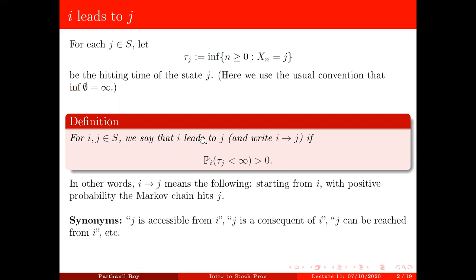Now the notation will be this. And as we talked about last time, there are lots of synonyms that can be used. j is accessible from i, j is a consequent of i, j can be reached from i, etc. Various textbooks use various names. And if you look at Sid Resnick's book, Adventures in Stochastic Processes, he uses this one, j is accessible from i, but we will stick to this i leads to j. It's very simple to state and very simple to write.